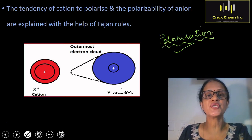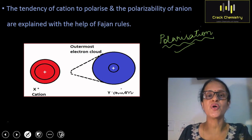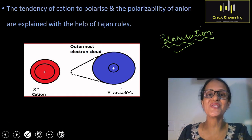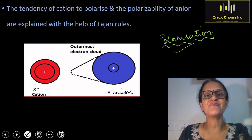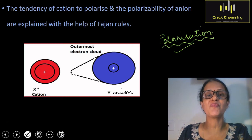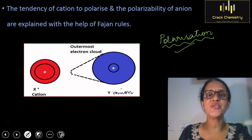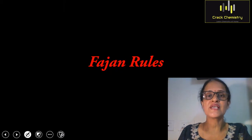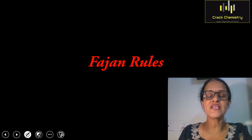In today's session, we will learn that polarization of an ionic bond depends on the polarizing power of a cation and the polarizability of an anion. These are explained with the help of a set of rules known as Fajan's rules. I am going to explain each and every rule one by one.